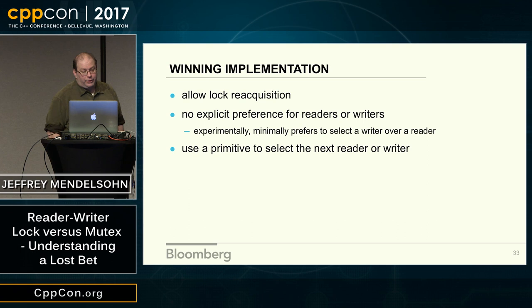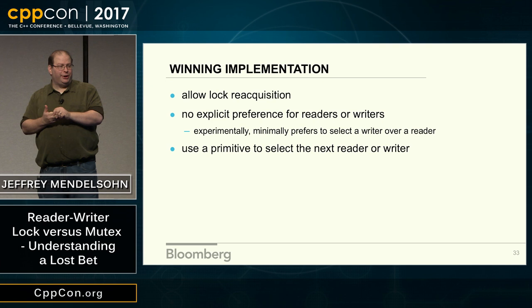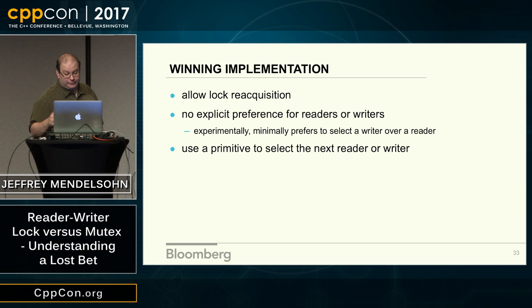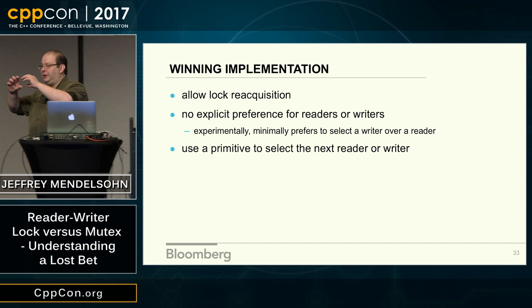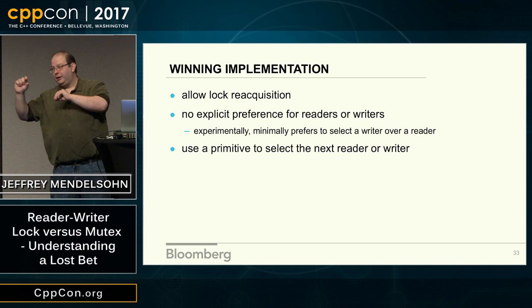What really made this lock implementation work well was the ability for a thread to reacquire the lock — come in, get the lock, do work, then reacquire it as quickly as possible. Whether reading or writing, that ability to reacquire was very important — that's where we got the efficiency from. On the lock side, you can imagine it being just a mutex: come in, get the mutex, release it when done. On the read side, lock and release the mutex in the lock_shared operation. There has to be some other machinery to keep everything consistent.